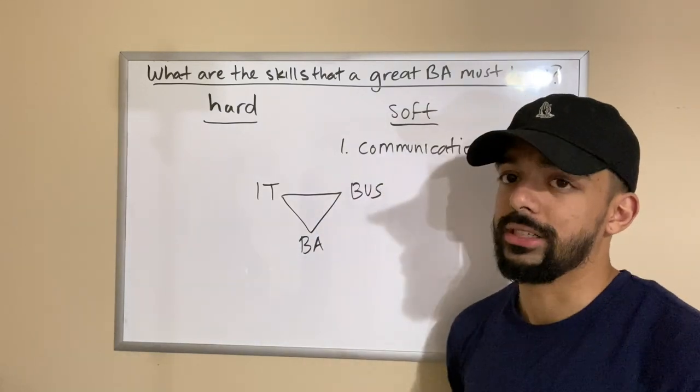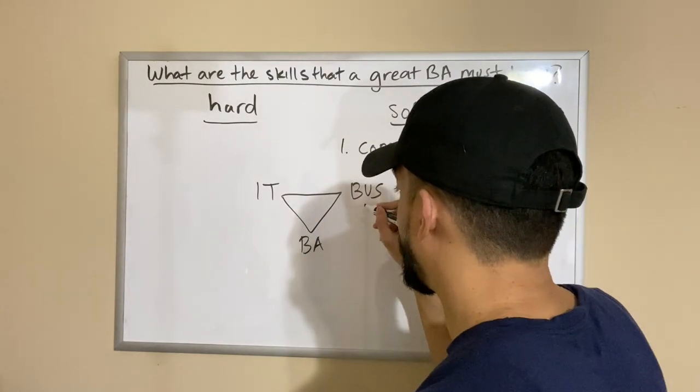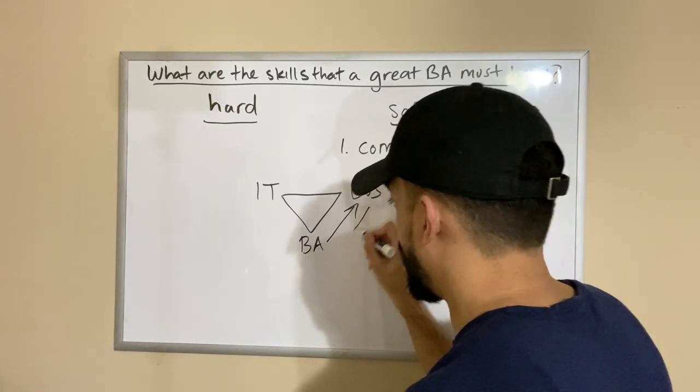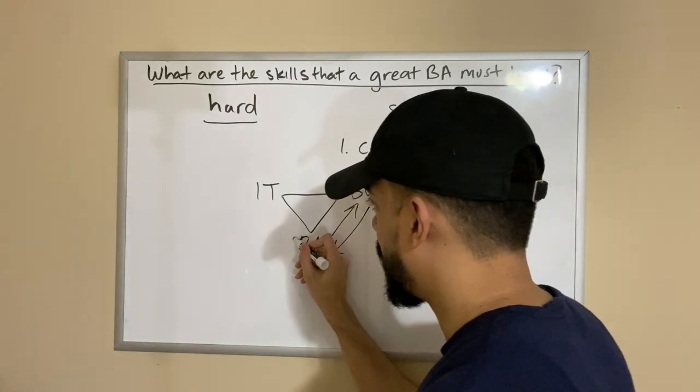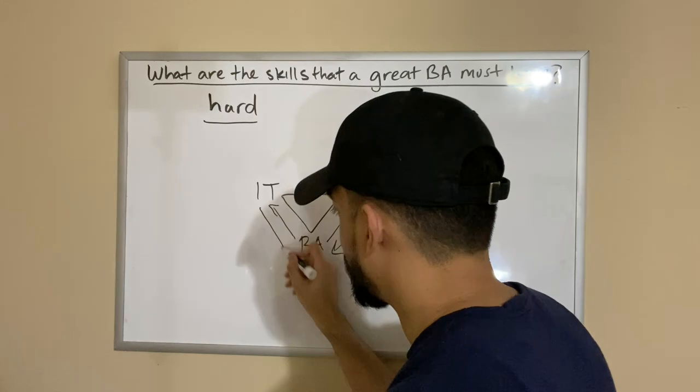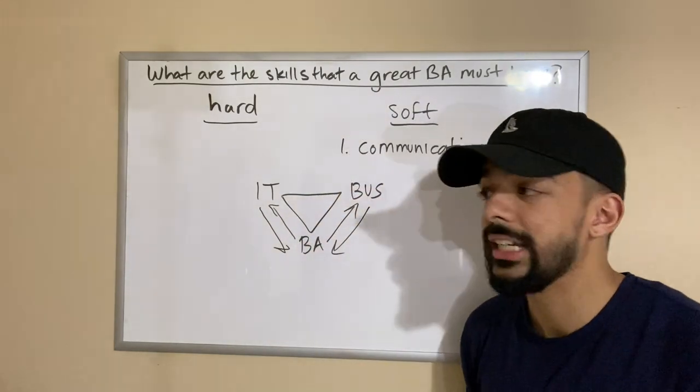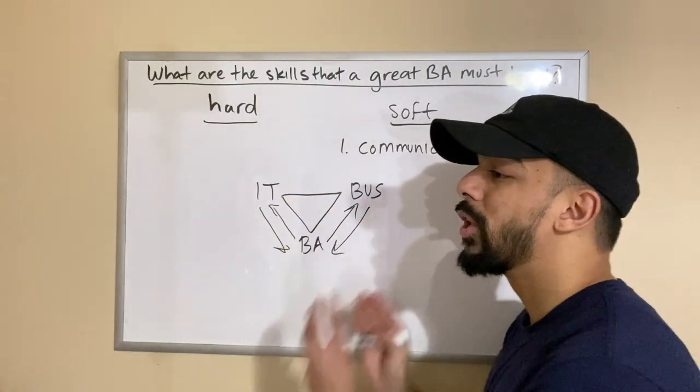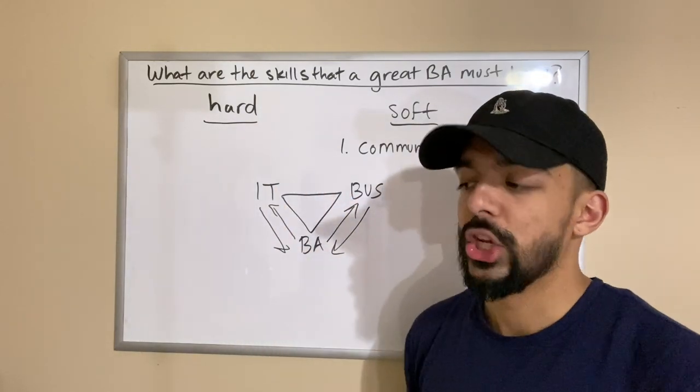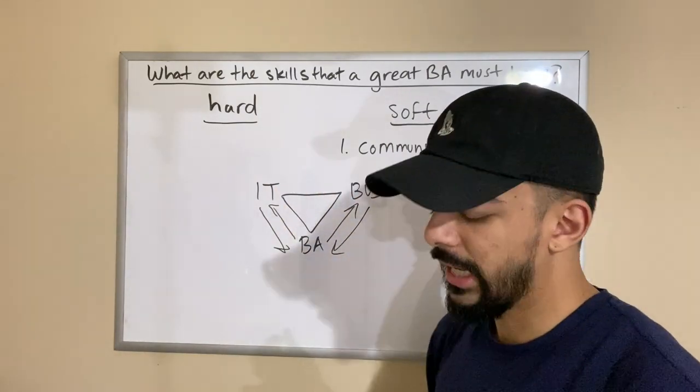The communication is key here because the business can't communicate to IT and that's where they need the BA to communicate to IT. So you got to have the communication to the business, when they communicate back to you you got to communicate that to IT. IT has any questions, communicate back to IT or back to business.